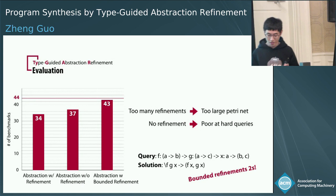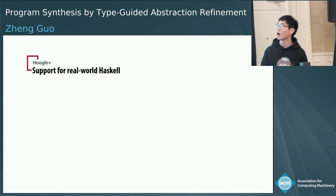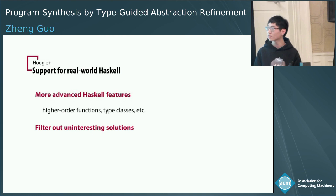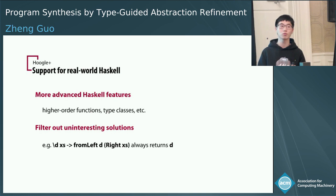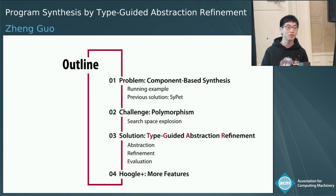In the last part, I will introduce some more features in our implementation. On top of polymorphism, we support more advanced Haskell features like higher-order functions and type classes. We also use techniques to filter out uninteresting solutions — for example, solutions that always return the first argument without actually using the second one. And that's all. Thank you, and I'm happy to take questions.